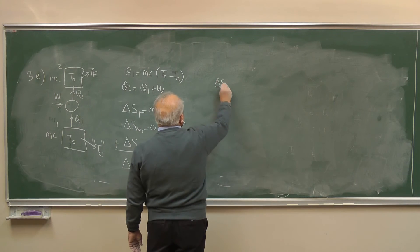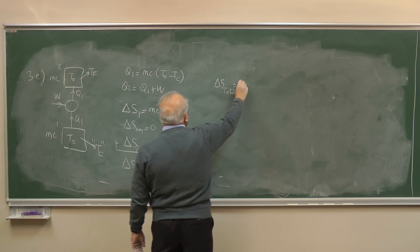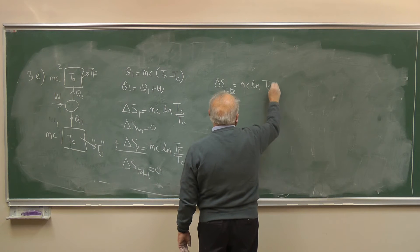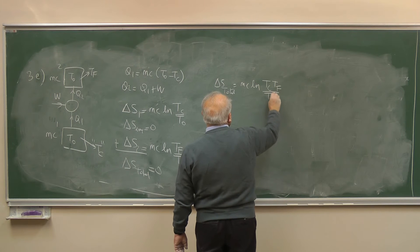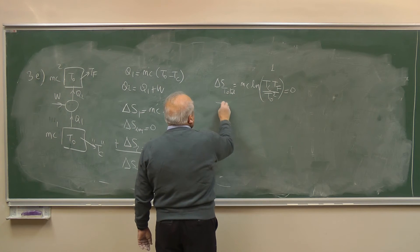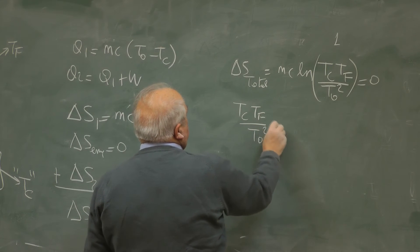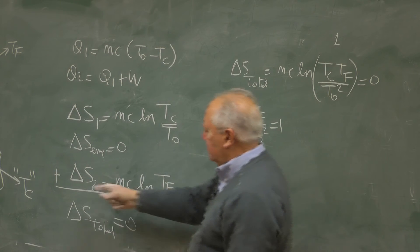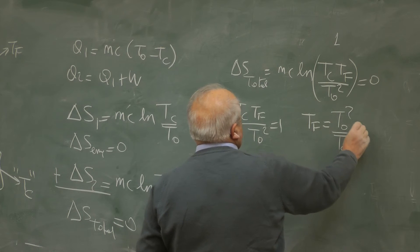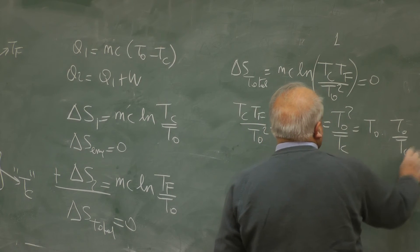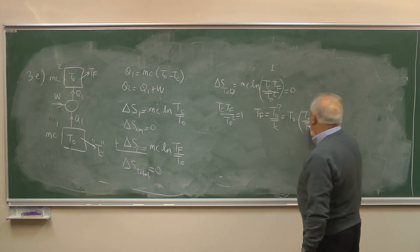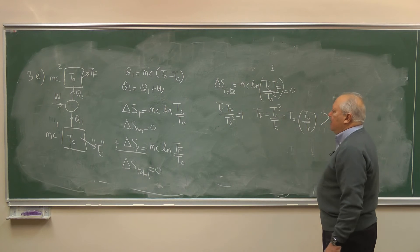Delta S total equals MC times log(Tc · Tf over T0 squared). This must equal 0, which means the log term must equal 1, so Tc · Tf over T0 squared equals 1. Tc is known — it is given. So the final temperature Tf equals T0 squared over Tc, which we can write as T0 times (T0 over Tc). Since T0 is higher than Tc, this ratio is larger than 1, meaning Tf is, as expected, larger than T0.